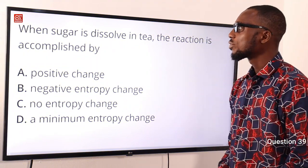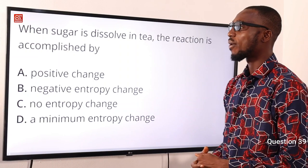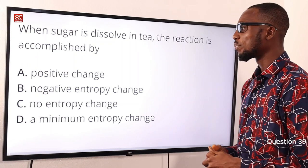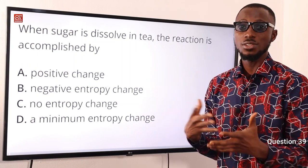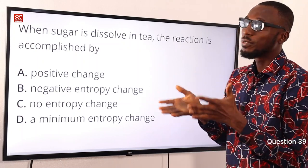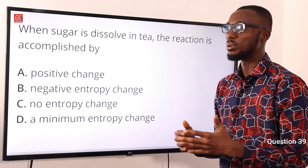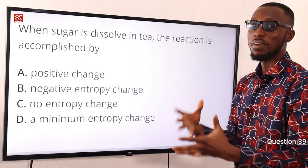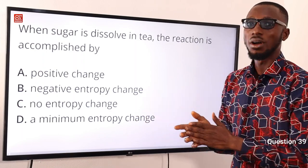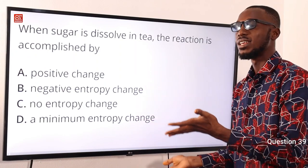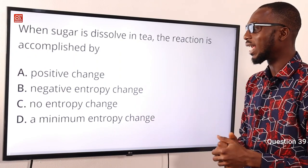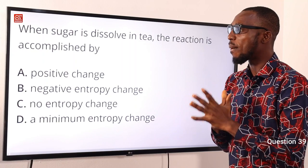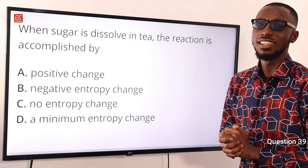Question 39: When sugar is dissolved in water, the reaction is accompanied by what? This involves a positive change in entropy value. In the process of dissolving, sugar moves from solid into the liquid phase. Moving from solid to liquid to gas means entropy is increasing — a positive change in entropy. Moving back from gas to liquid (condensing) gives a negative entropy value. So the correct option is option A — positive change in entropy.